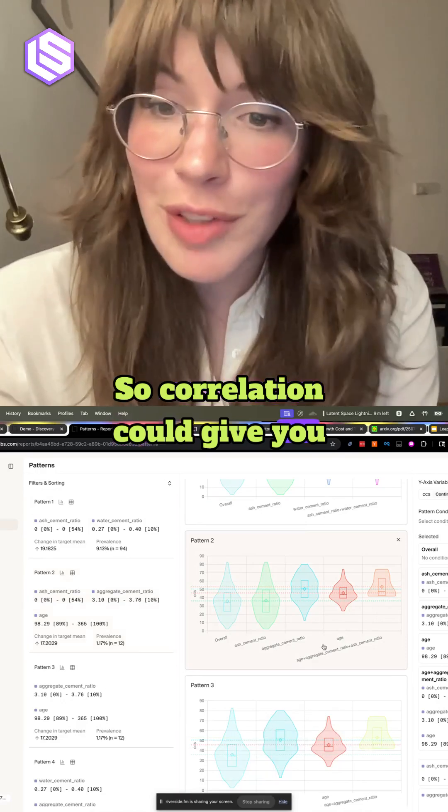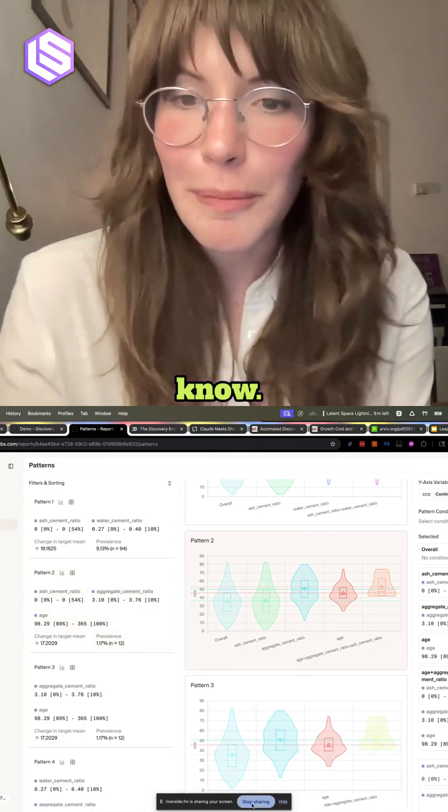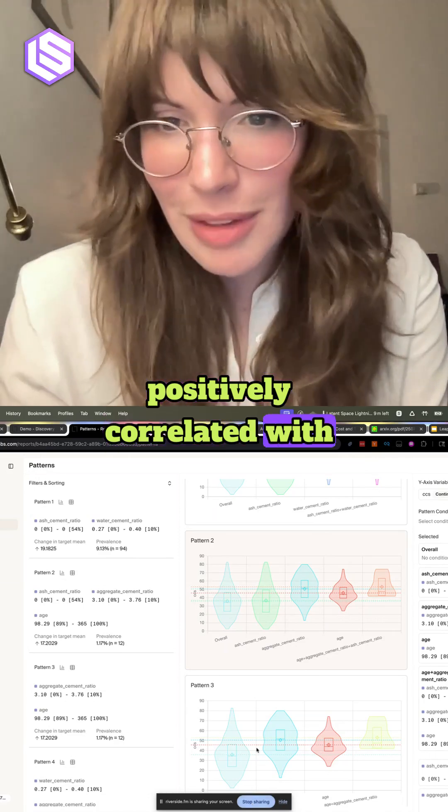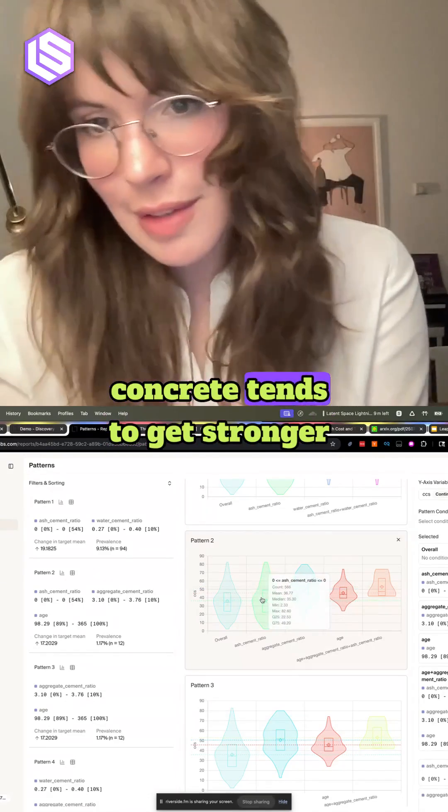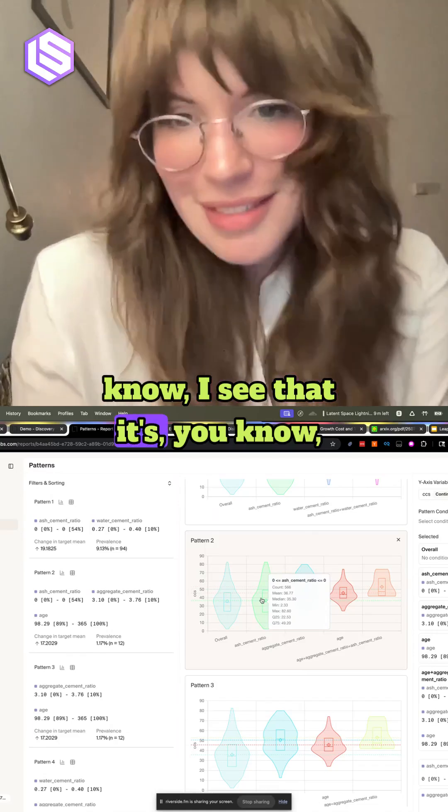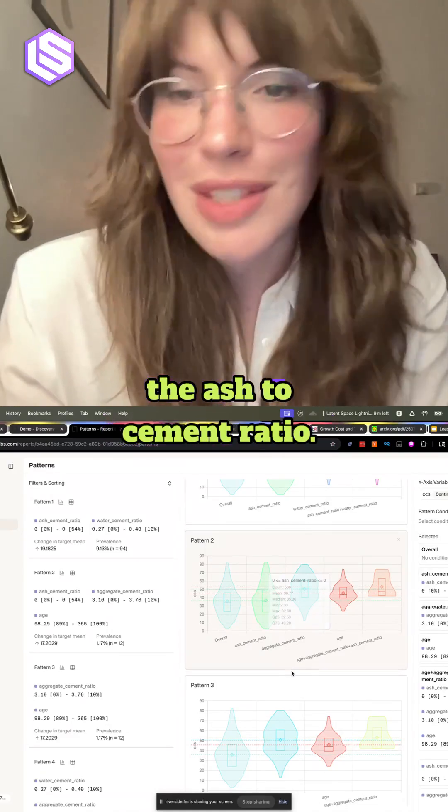So correlation could give you these. You might see like, I see that concrete compressive strength is positively correlated with age, which is true because concrete tends to get stronger as it cures. Or you could be like, I see that it's negatively correlated with the ash to cement ratio.